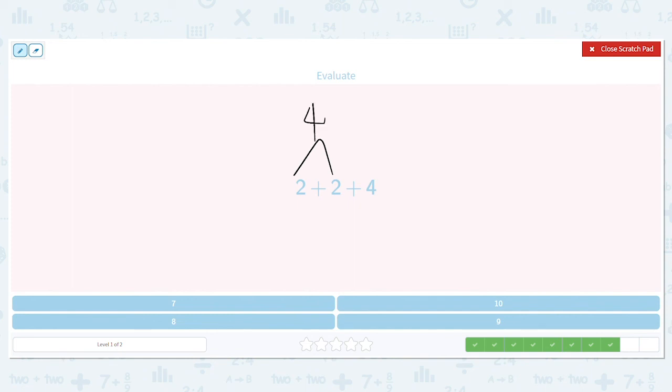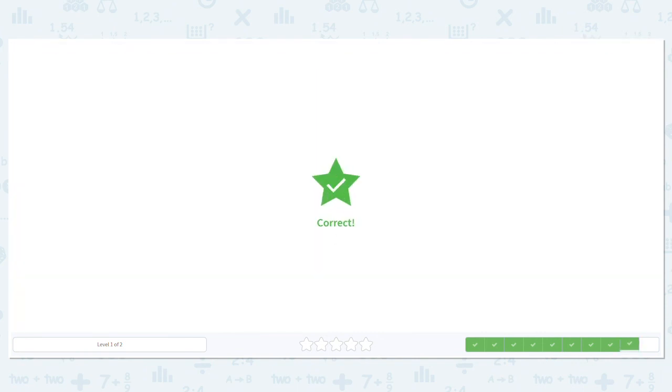Good job. I'm done with my two, so I cross them out. So what do I have left? I have the four and the four. So four plus four equals what? That equals eight. So two plus two plus four equals eight.